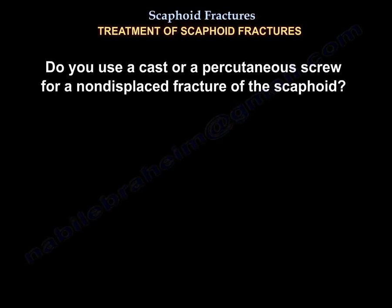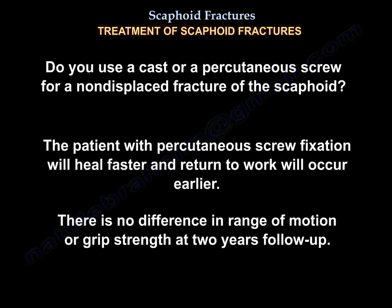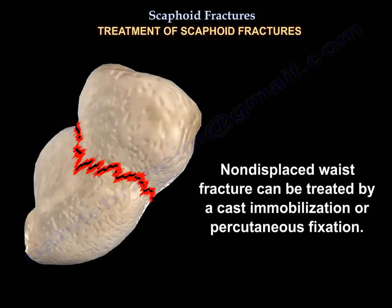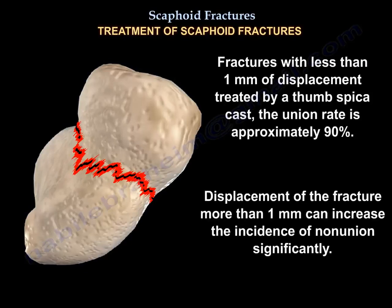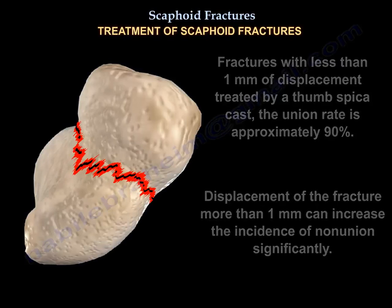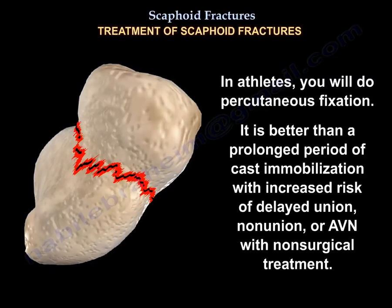Should you use a cast or percutaneous screw for a non-displaced scaphoid fracture? Patients with a percutaneous screw have faster fracture healing and return to work earlier, with no difference in range of motion or grip strength at 2-year follow-up. Non-displaced waist fractures can be treated by cast immobilization or percutaneous fixation. Fractures with less than 1 mm displacement treated by thumb spica cast have a union rate of approximately 90%. Displacement more than 1 mm significantly increases nonunion risk. In athletes, percutaneous fixation is preferred over prolonged cast immobilization due to increased risk of delayed union, nonunion, and AVN with non-surgical treatment.